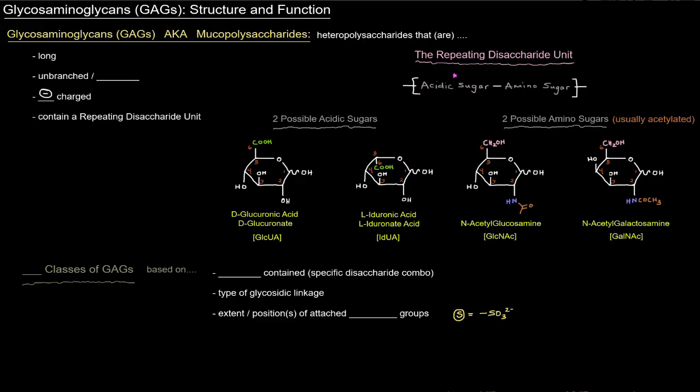In this video I want to talk a little bit more about glycosaminoglycans, specifically their structure and function, at least to introduce them. Glycosaminoglycans or GAGs, also known as mucopolysaccharides, are heteropolysaccharides that are long, hence the poly, unbranched and linear, and they're really negatively charged. They contain a repeating disaccharide unit, so I want to talk a little bit more about what this repeating disaccharide unit is.